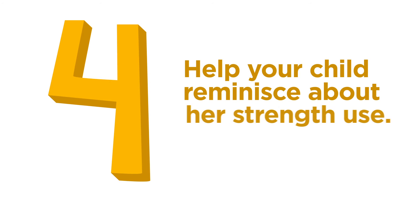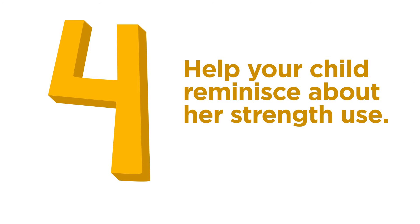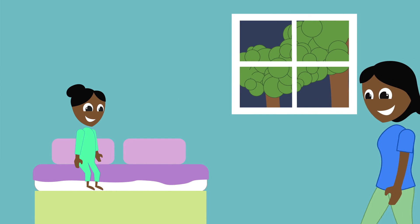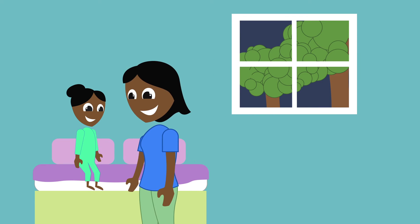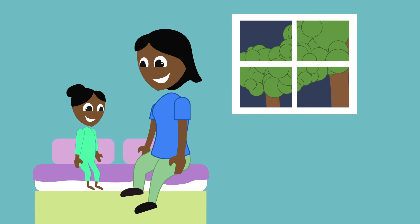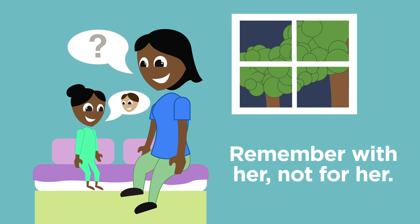Four, help your child reminisce about her strength use. The more you help your child remember her strength use, the more likely it will become a core belief about herself. Make a bedtime ritual of helping your child reminisce about her strength use that day. It's important to remember with her and not remember for her. For example, when tucking your child in, you might say, remember when Jamal was having a hard time this morning? What happened? What did you say to him? How did it feel to stand up for him? That was very brave of you. I really admire what a good friend you are.